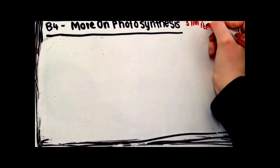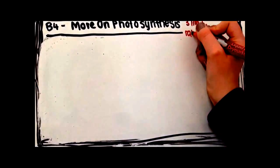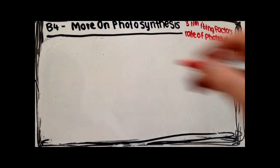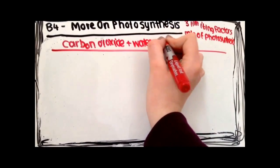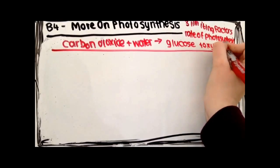There are three limiting factors that control the rate of photosynthesis. First is light. Light provides energy needed for photosynthesis.